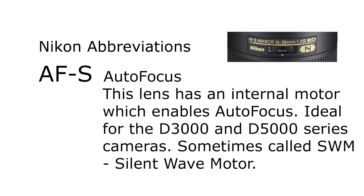AFS means autofocus, and this is really important if you have a D3000 or D5000 camera because those cameras don't have internal motors. So if you want your lens to have autofocus, the lens has to have the motor because the body doesn't. As well as AFS, they might also have the initials SWM for silent wave motor, which means it's a slightly more modern, slightly more video-friendly type of lens with a quieter internal motor. If you have a D5200, you're really looking for an AFS or SWM lens so that you don't have to manually focus.